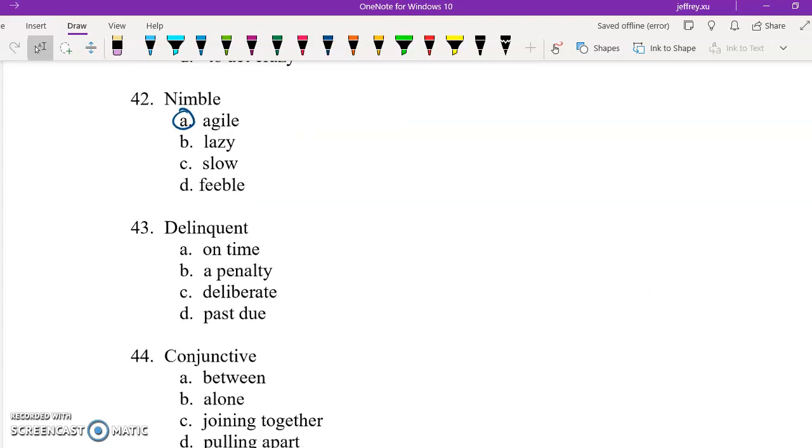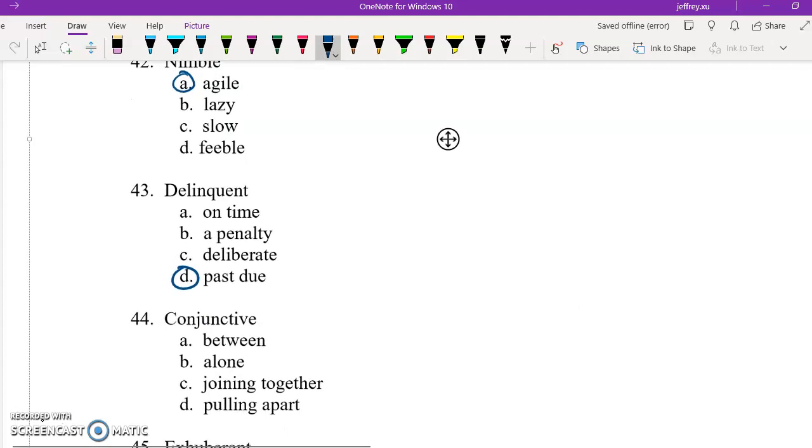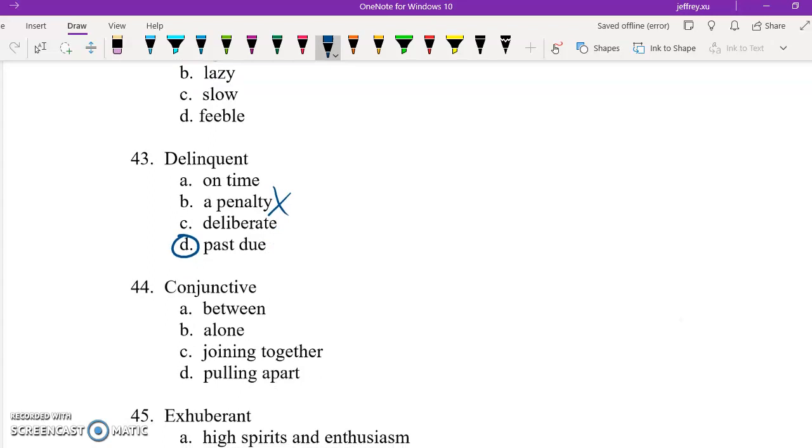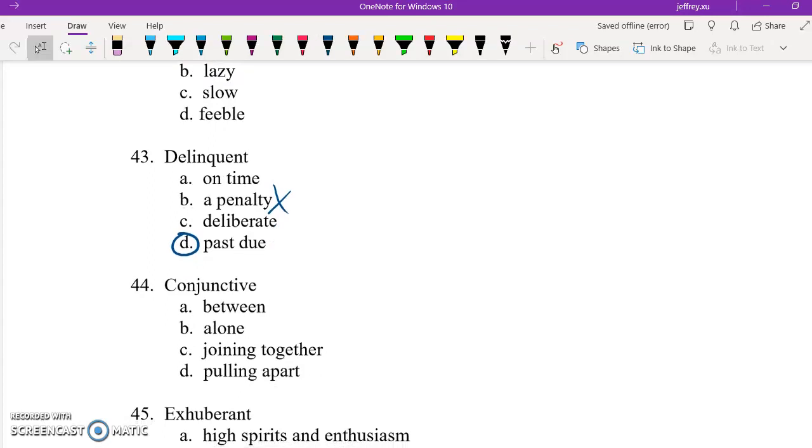43, delinquent would most correctly refer to past due. And if you're ever unsure about this, you can think about, first of all, what part of speech is it? And second of all, the connotation. So delinquent would have a pretty negative connotation. And if you've ever heard of the term like a juvenile delinquent, it'd be someone who commits crimes at a really young age. So it doesn't necessarily correlate to penalty. It's more of an action or a state of being for a person. So D would be most correct for this one.